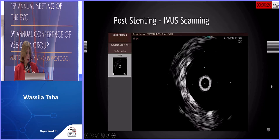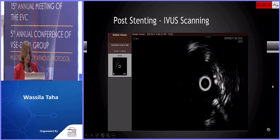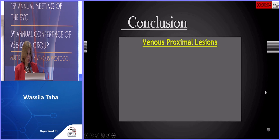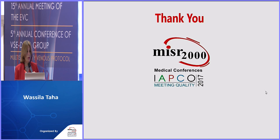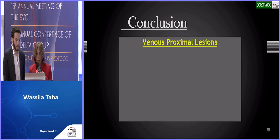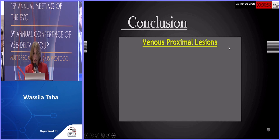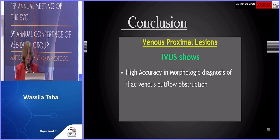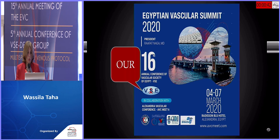There is no debris and no remnants of the previous post-thrombotic material. Duplex follow-up by B-mode and dynamic color flow shows a well-deployed stent with full color saturation and full patency. Both cases were performed by Dr. Rashad Bishar, the head of our team. In conclusion, IVUS shows high accuracy in morphological diagnosis of iliac venous outflow obstruction and provides invaluable assistance in the accurate placement of venous stents.